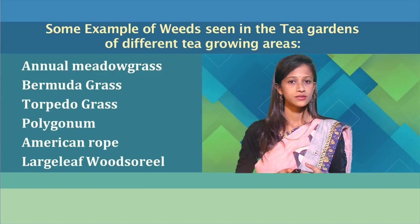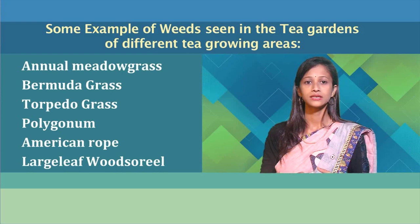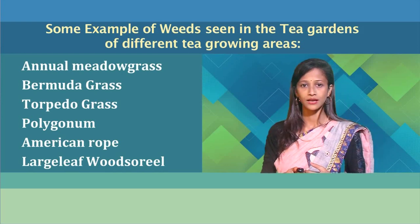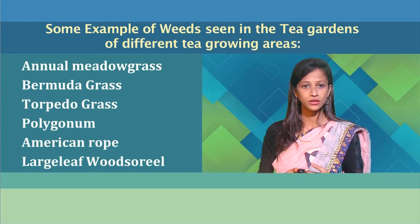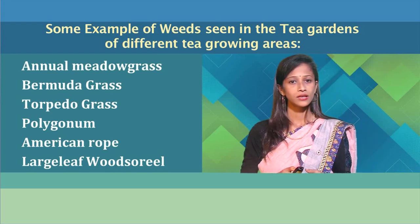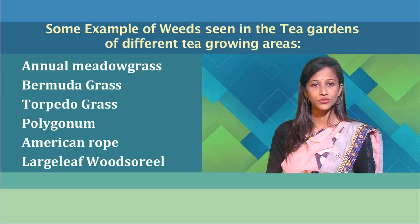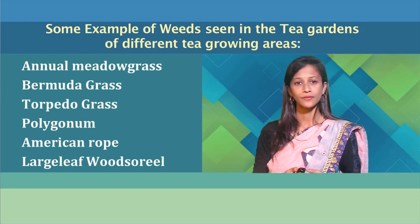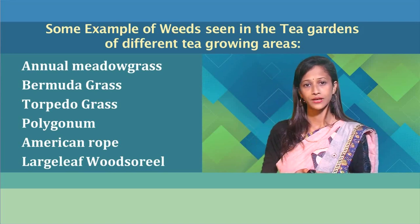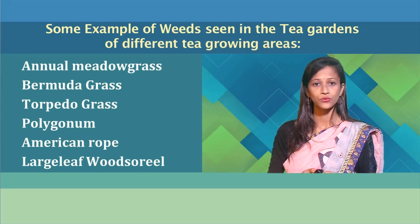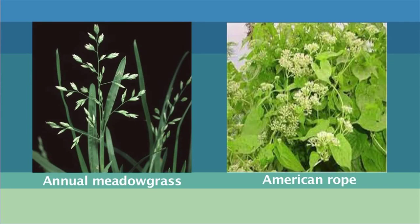Some examples of weeds seen in the tea gardens of major tea growing areas of the world include annual grass, Bermuda grass, torpedo grass, Polygonum, American drop, large leaf, and wood sorrel. These are the common weeds dominant in tea growing areas of the world.